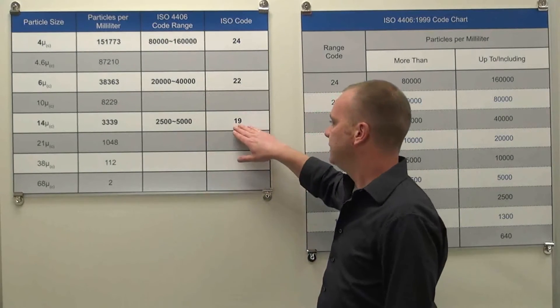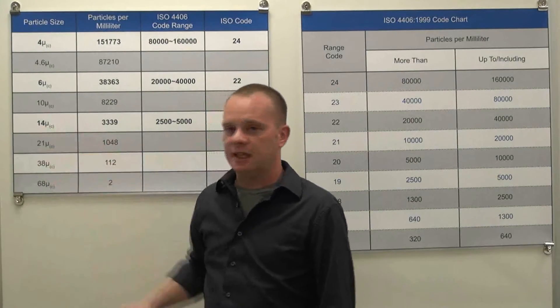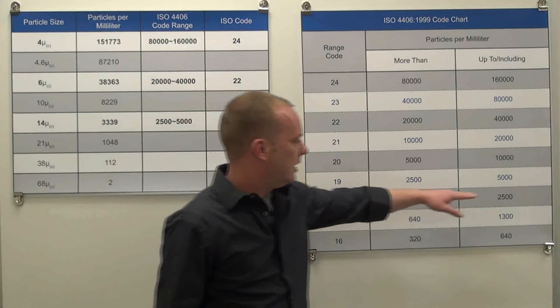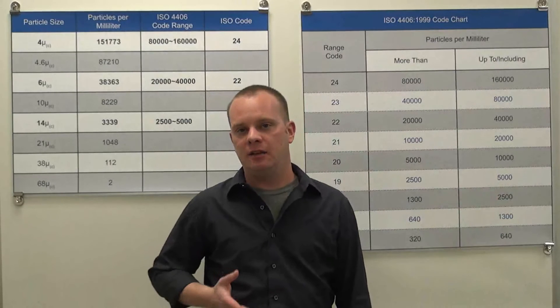And finally, our last code, 19, represents all particles that are 14 micron in size and larger. So, our 19 means that we have between 2,500 and 5,000 particles per milliliter that are 14 micron in size and larger.